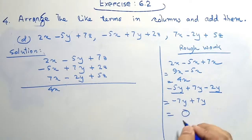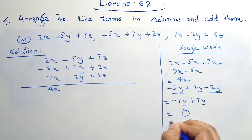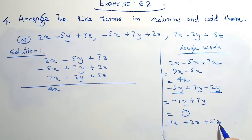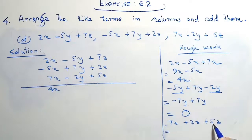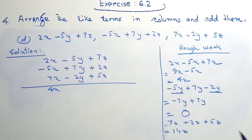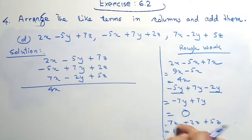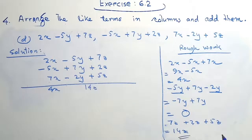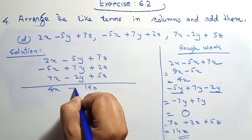And lastly the value of z will be 7z plus 2z plus 5z. 7z plus 2z equals 9z, and 9z plus 5z equals 14z. Because these are all like terms, so we need to add all the terms. Therefore the value will be 14z. So 14z is our answer — 14z is positive, therefore here we write plus sign.